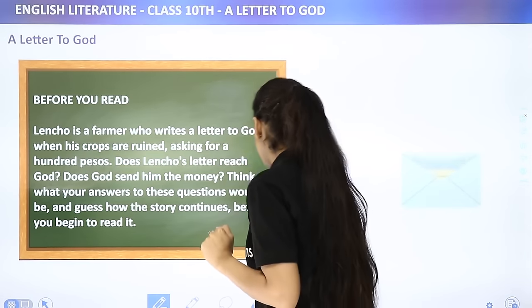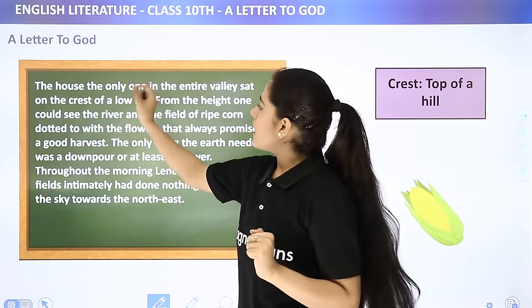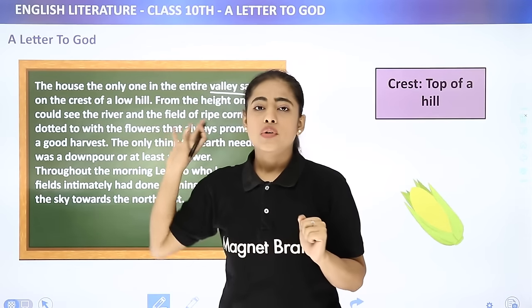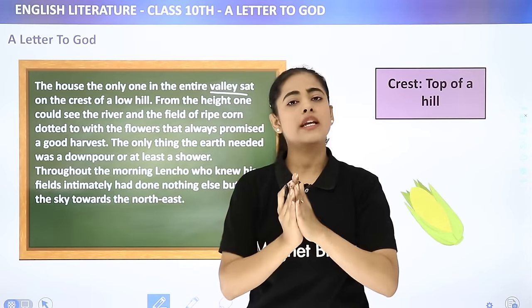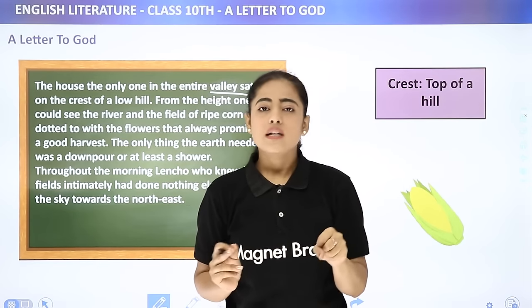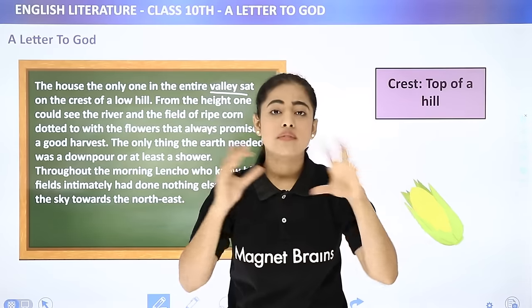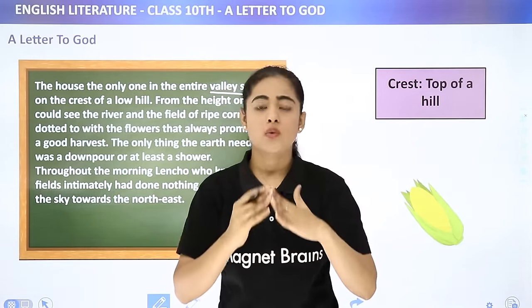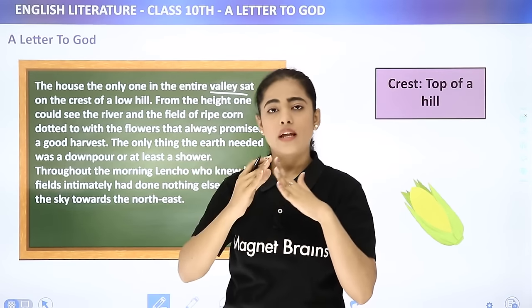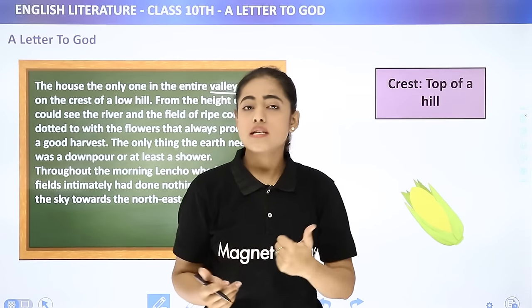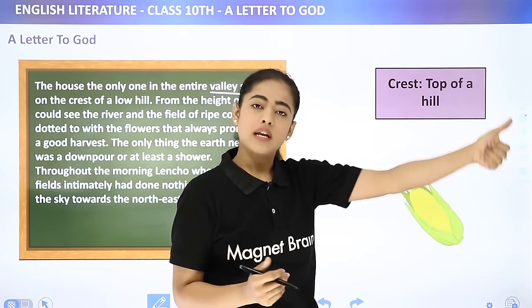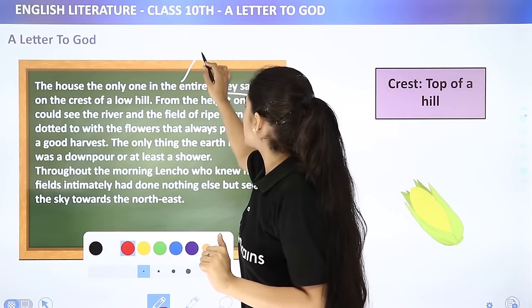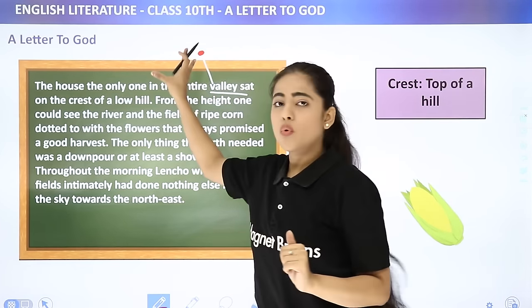So now we are ready to jump into the story and see exactly in which way our author G.L. Fuentes has written it. The house — the only one in the entire valley — sat on the crest of a low hill. 'Crest' means the top of a hill. So you can imagine a house sitting at the very top of a low hill.